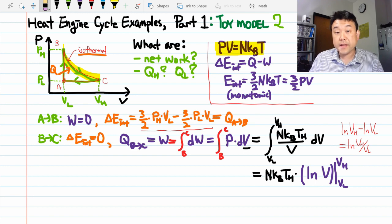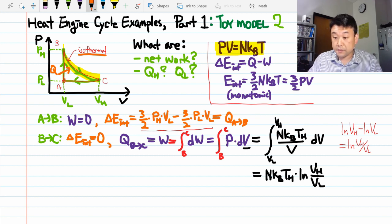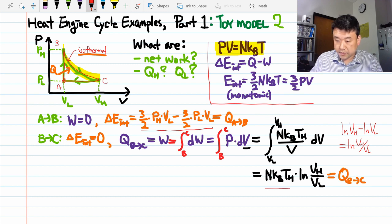And as I wrote earlier, this is the heat transfer from B to C. Carefully looking at this number here, since VH is greater than VL, this is a positive number. That means there's a heat inflow during this expansion here. I think that's all of the heat inputs.